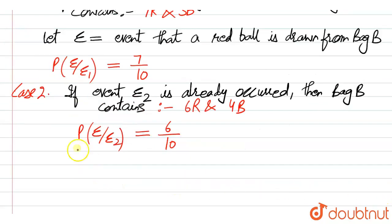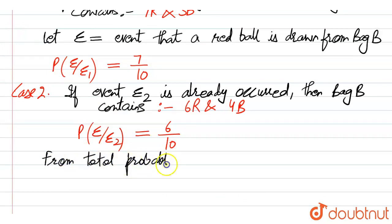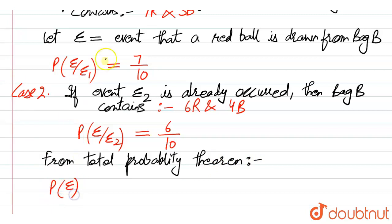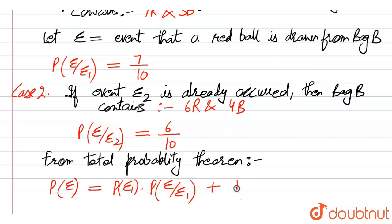So we can say that the required probability, from the total probability theorem, is: probability of E equals probability of E1 into probability of E given E1, plus probability of E2 into probability of E given E2.